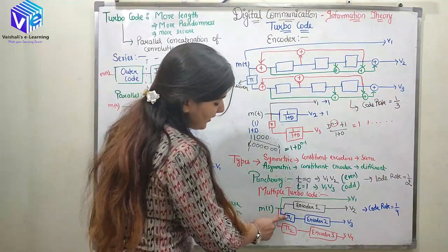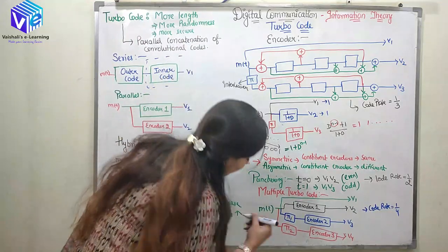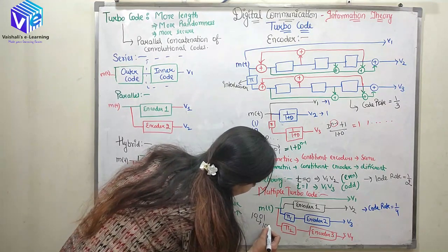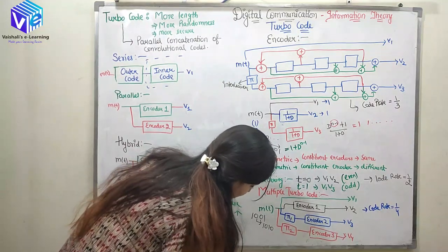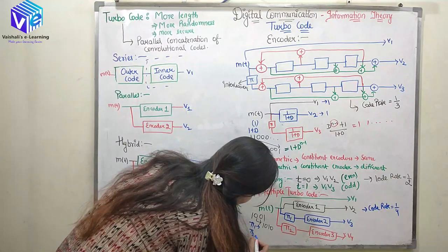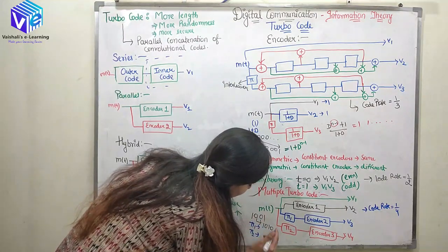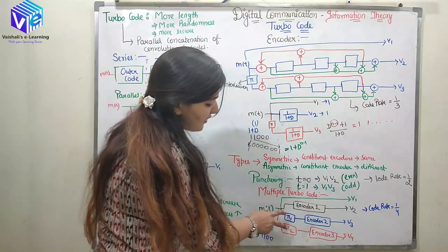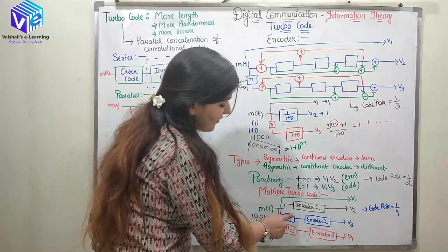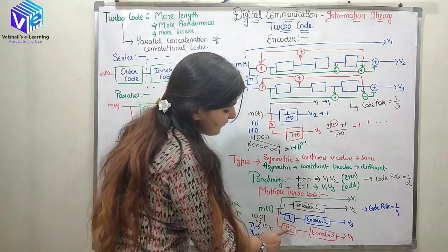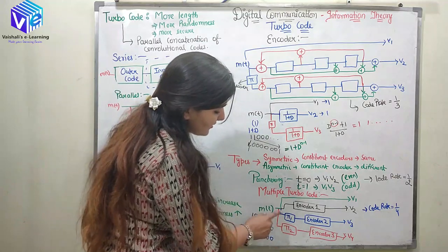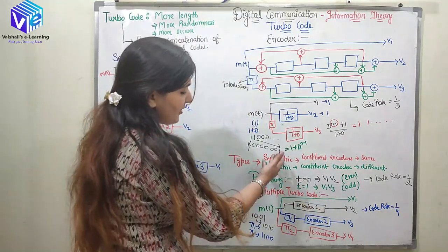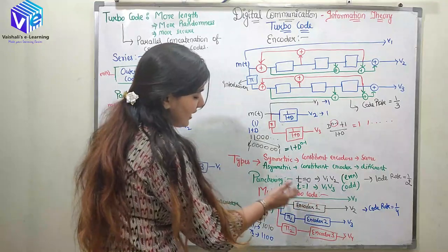Here I took 2 interleavers, so I will get the first rearrangement. If my message signal is 1001, maybe the first interleaver can convert it as 1010, and the second interleaver pi2 output would be somewhat different than this. We have two interleavers which are giving me two rearranged forms. These are passed through encoders 1, 2, and 3. If these encoders are the same we will call it symmetric; if these encoders are of different kind we will call it asymmetric.